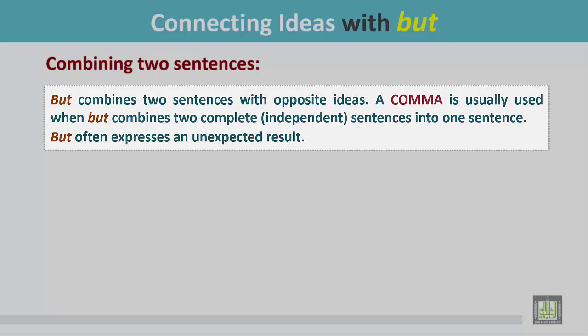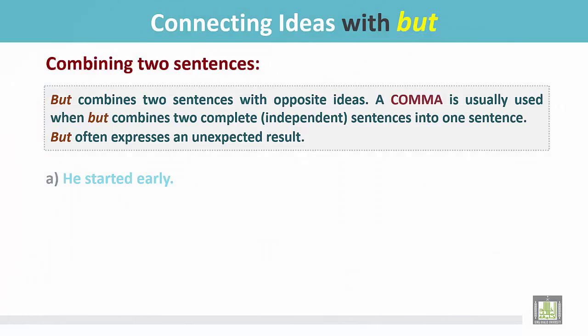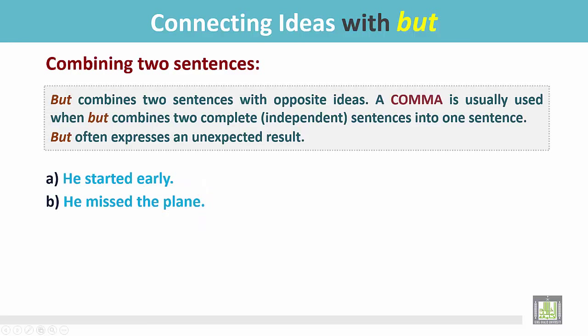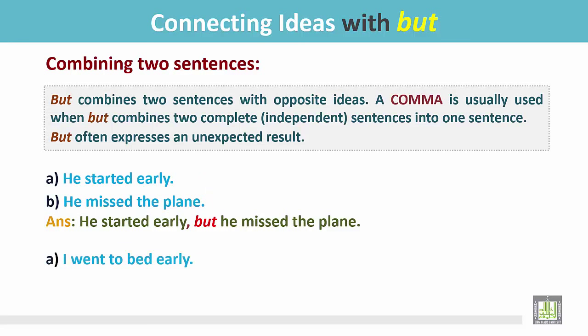But often expresses an unexpected result. See these examples: 'He started early. He missed the plane.' Since he started early, he should catch the plane, but he couldn't — it is an unexpected result and the ideas in these two sentences are opposite. So if we join these two sentences using 'but': 'He started early, but he missed the plane.'